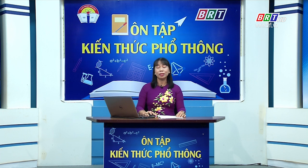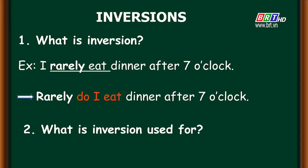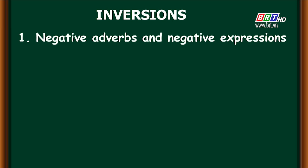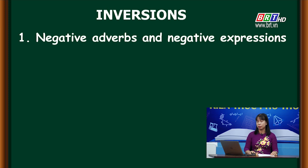Đảo ngữ có tác dụng như thế nào? What is inversion used for? Đảo ngữ được dùng để nhấn mạnh, và nó có tác dụng làm đa dạng cách diễn đạt câu văn và lời nói. Trong bài ngày hôm nay, cô sẽ giới thiệu một số trường hợp đảo ngữ thông thường. Trường hợp thứ nhất: negative adverbs and negative expressions — các trạng từ chỉ sự phủ định và cụm từ chỉ sự phủ định.